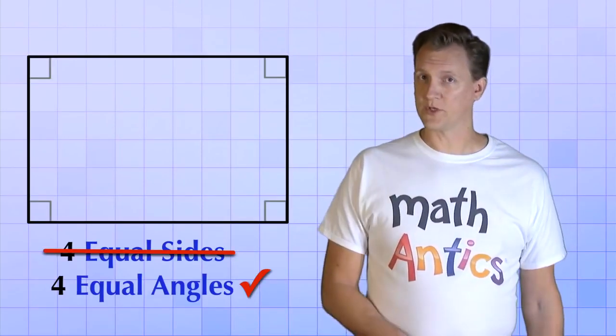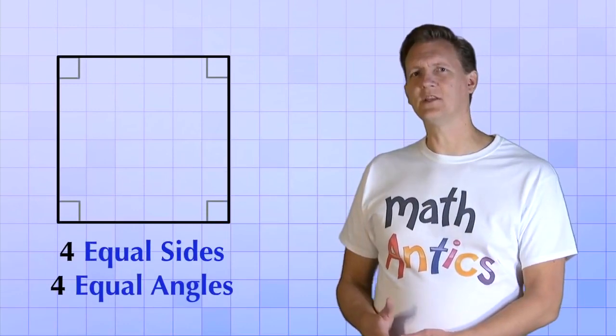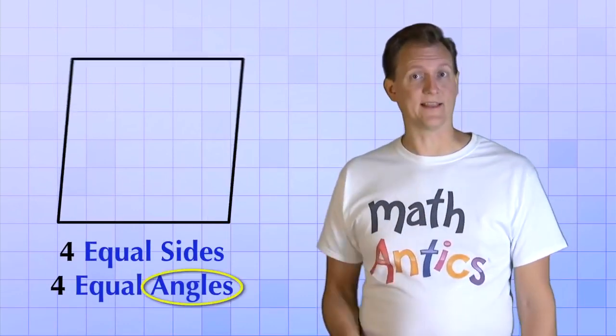Alright, so that's a rectangle, but going back to our square, what if instead of changing the sides, we had just changed the angles, like this?